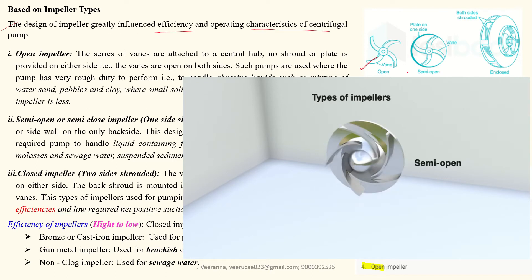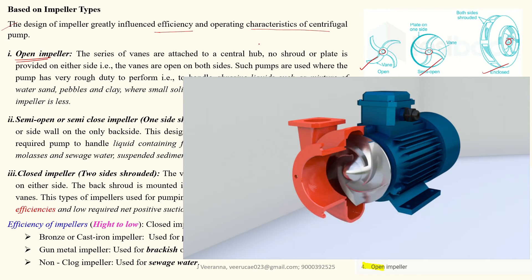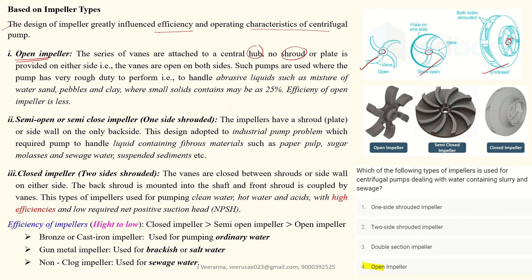The next classification is based on the impeller type. Impellers may be open, semi-open, or closed. The open impeller has no shroud or hub attached on either side. These pumps handle very rough duty and are used where high sand, mud, clay, and small solid contamination is present. However, the efficiency is very low — around 25%.